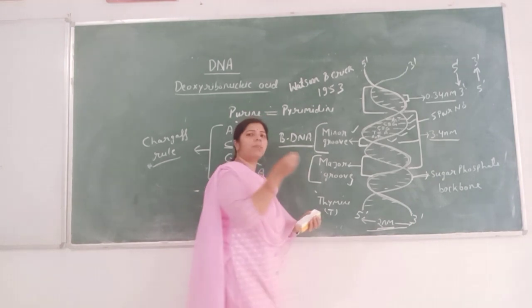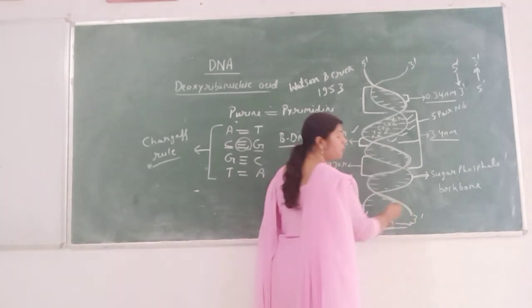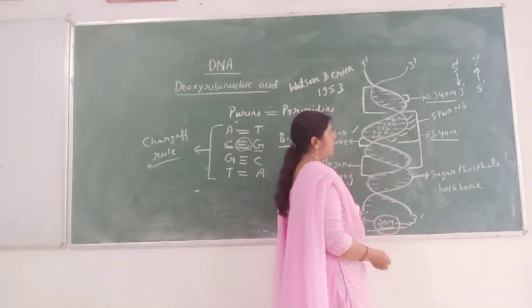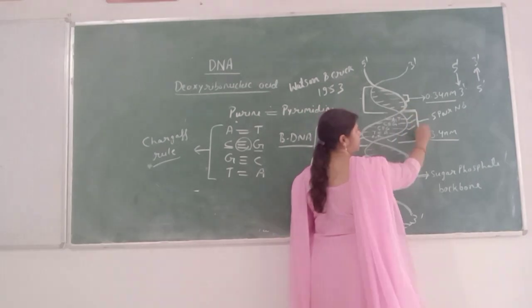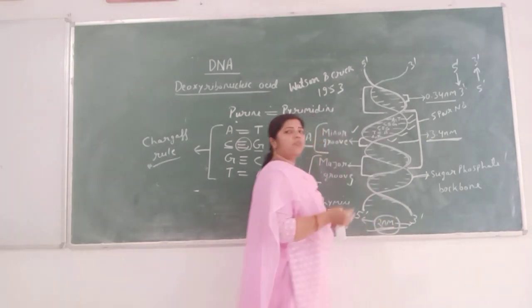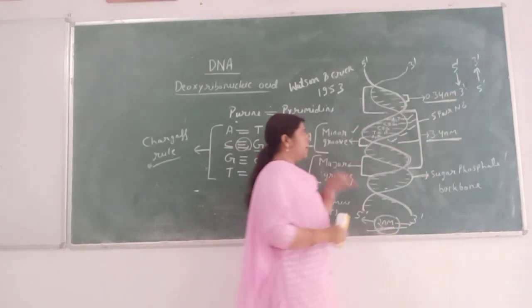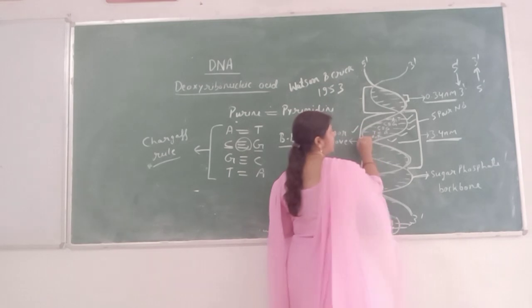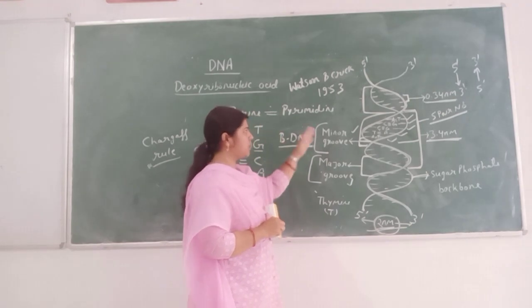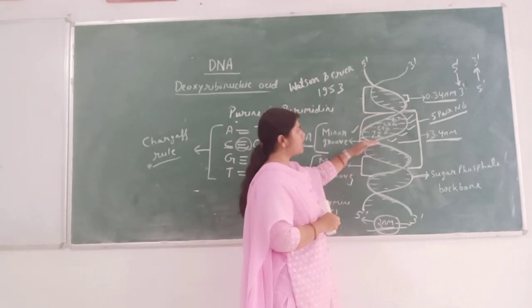The distance between two strands or two polynucleotide chains is 2 nanometers. The distance of one helical turn is 3.4 nanometers. The distance between two nucleotides is 0.34 nanometers. In one helical turn there are 5 base pairs of nitrogenous bases — meaning one complete helical turn contains 10 nitrogenous bases.